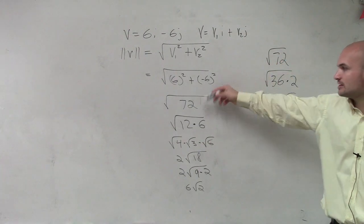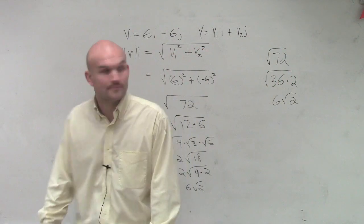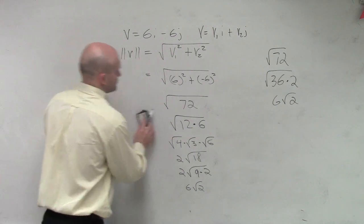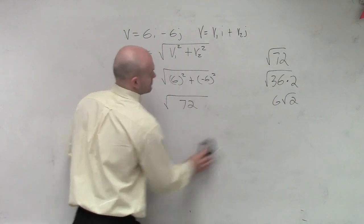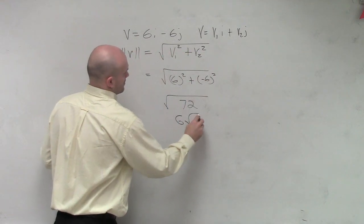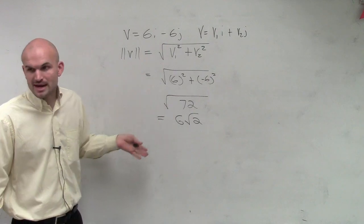But 36 would have been the best answer for us to choose that divides into there, right? But if you can't think of it and you think of 12 and 6, then you do it. But you can still simplify that further. Does that make sense? So we have 6 radical 2. So that's the magnitude.